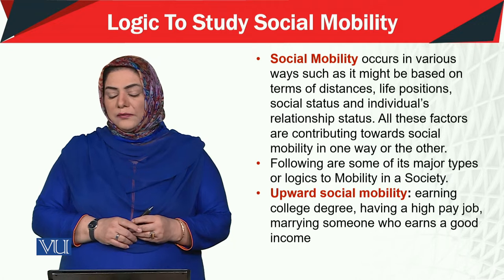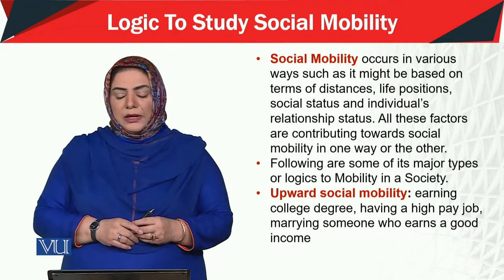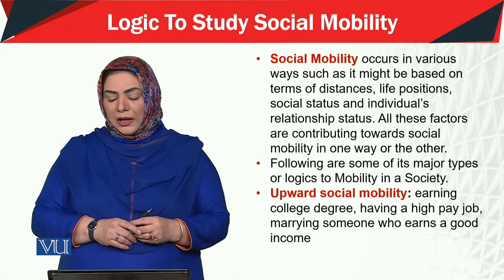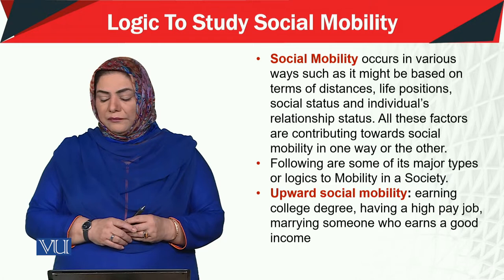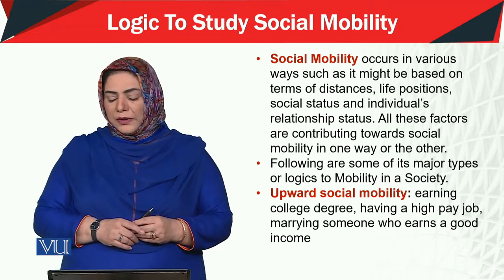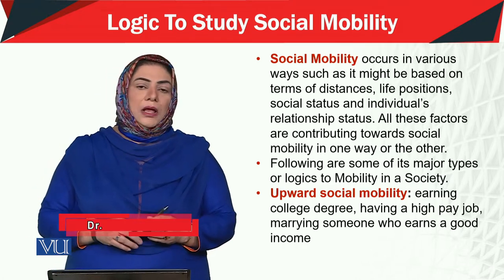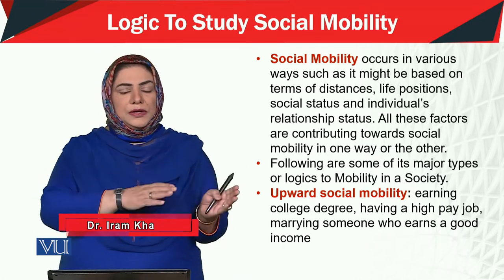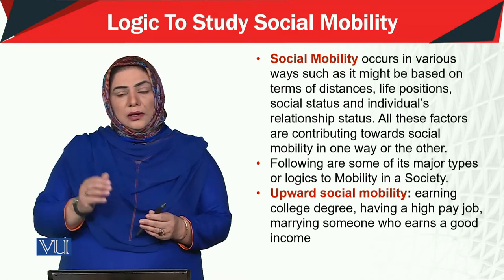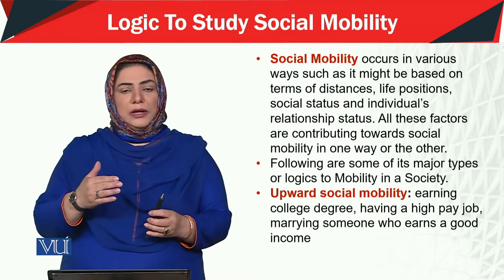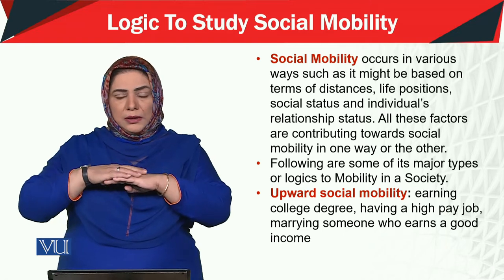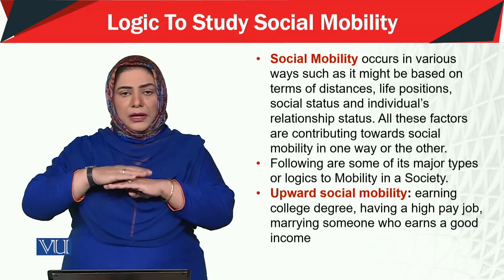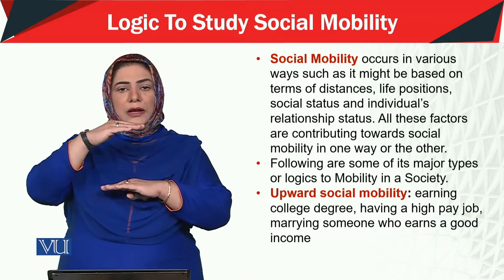Following are some of the major types or logics of mobility in a society. The first is upward social mobility — like earning a college degree, having a high-pay job, or marrying someone who earns a good income. Social mobility means that when a person moves from one status to another, that is called upward mobility — your position moves upward, your status shifts to a higher level.